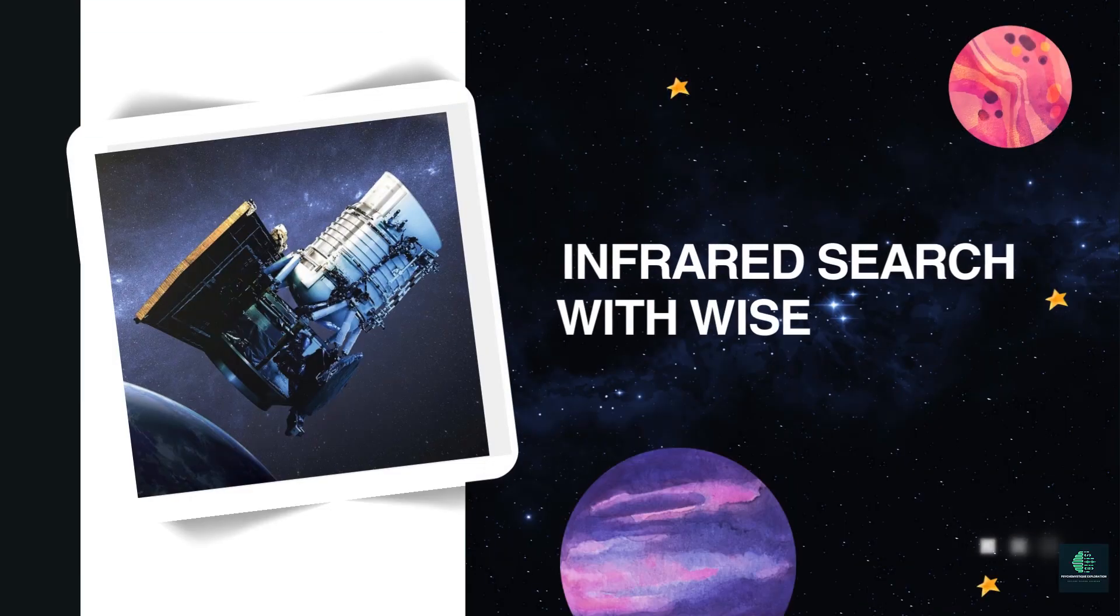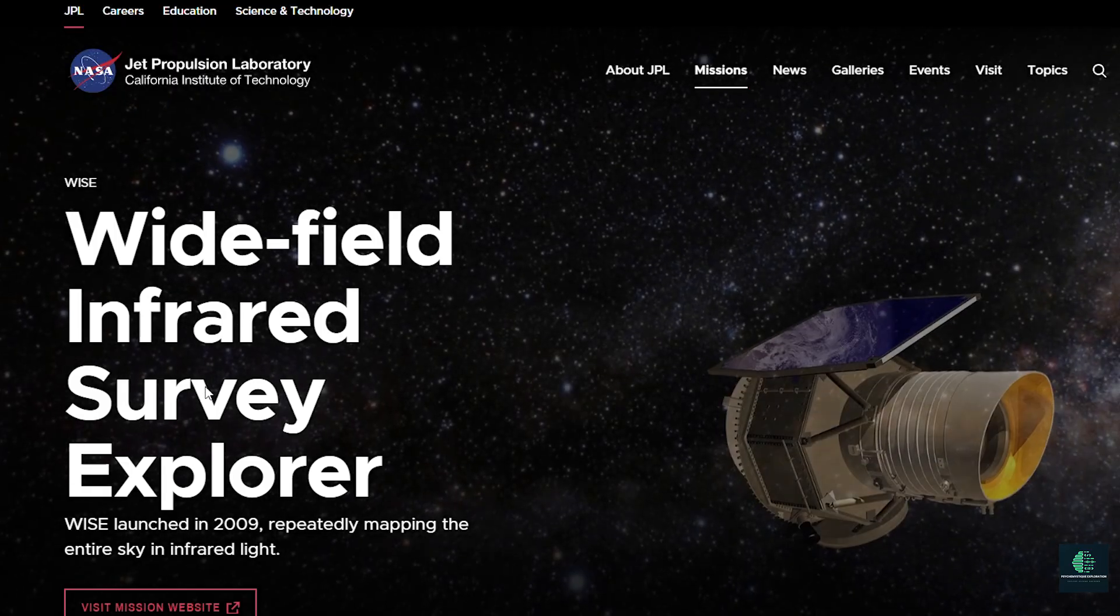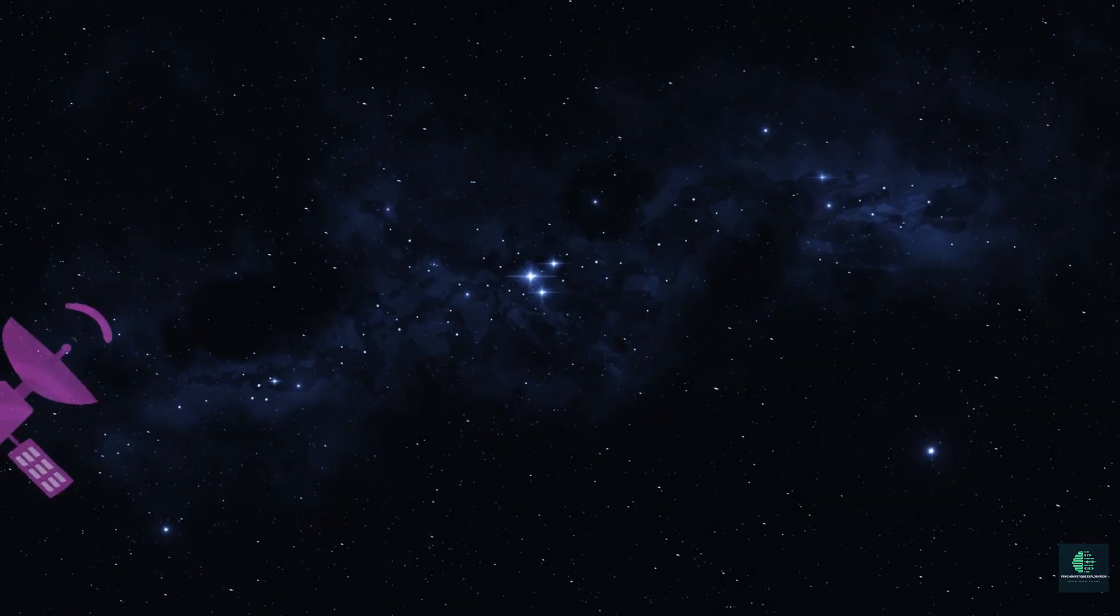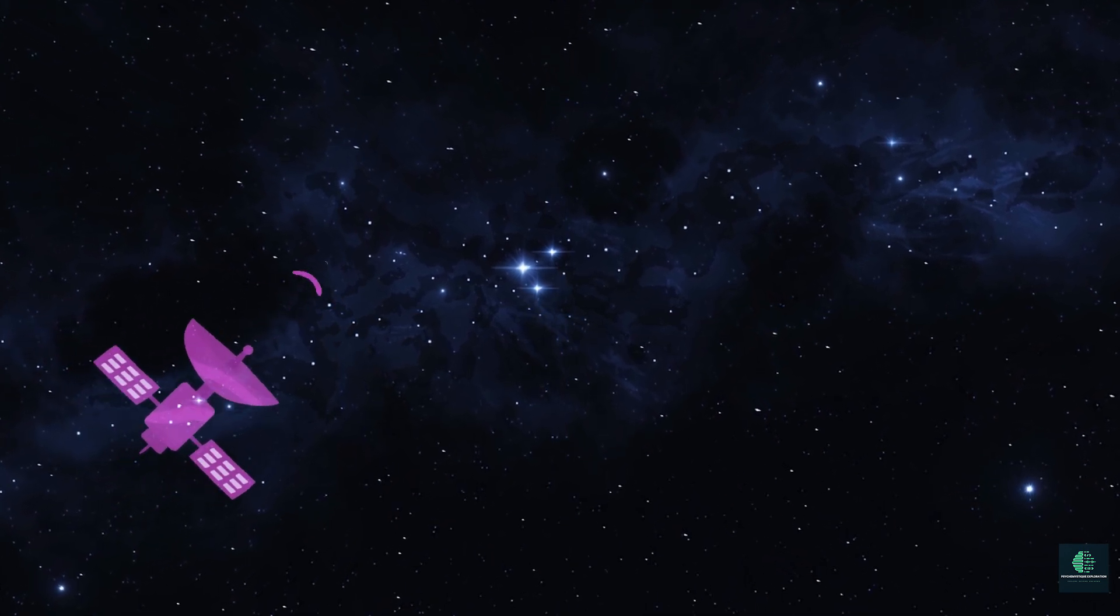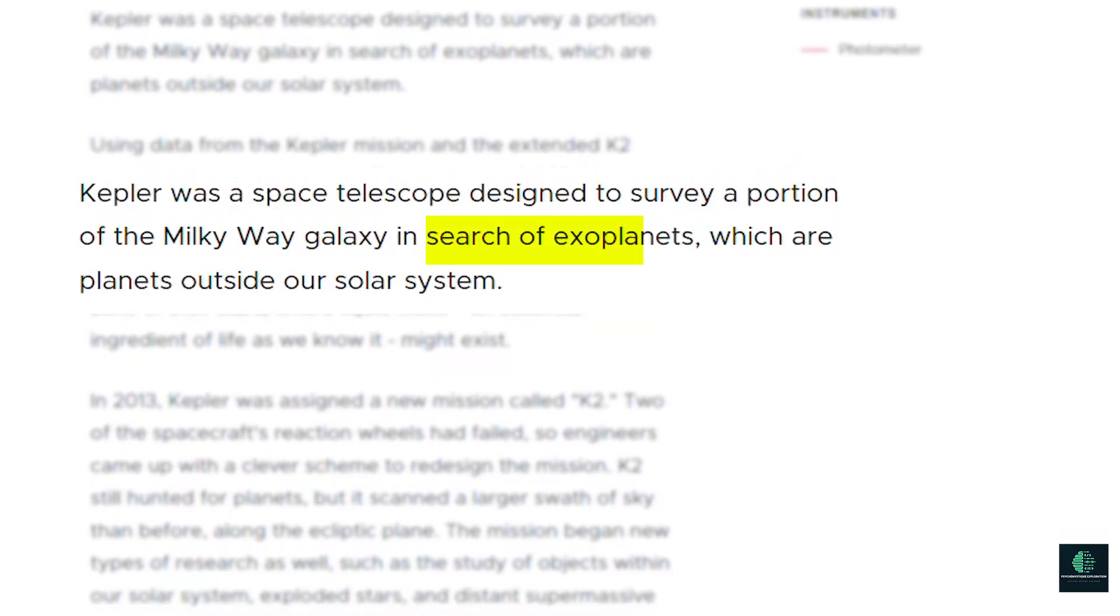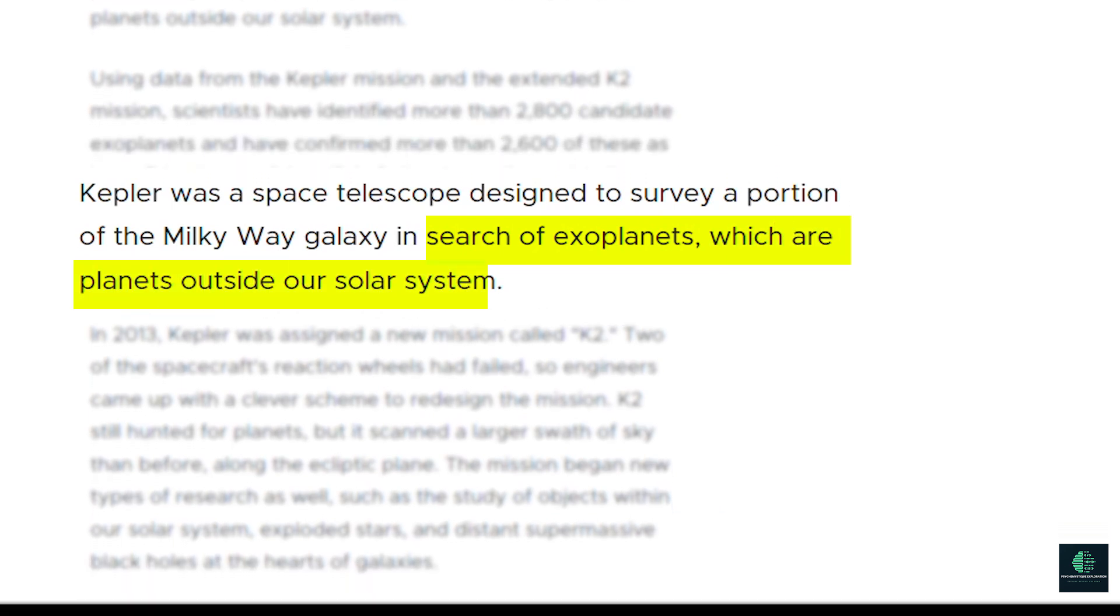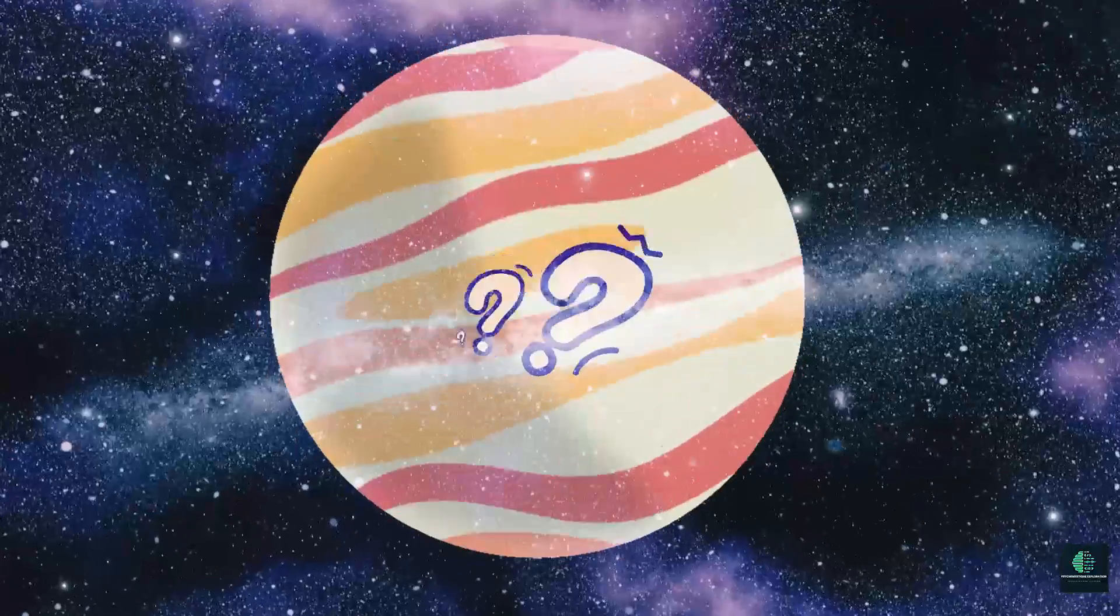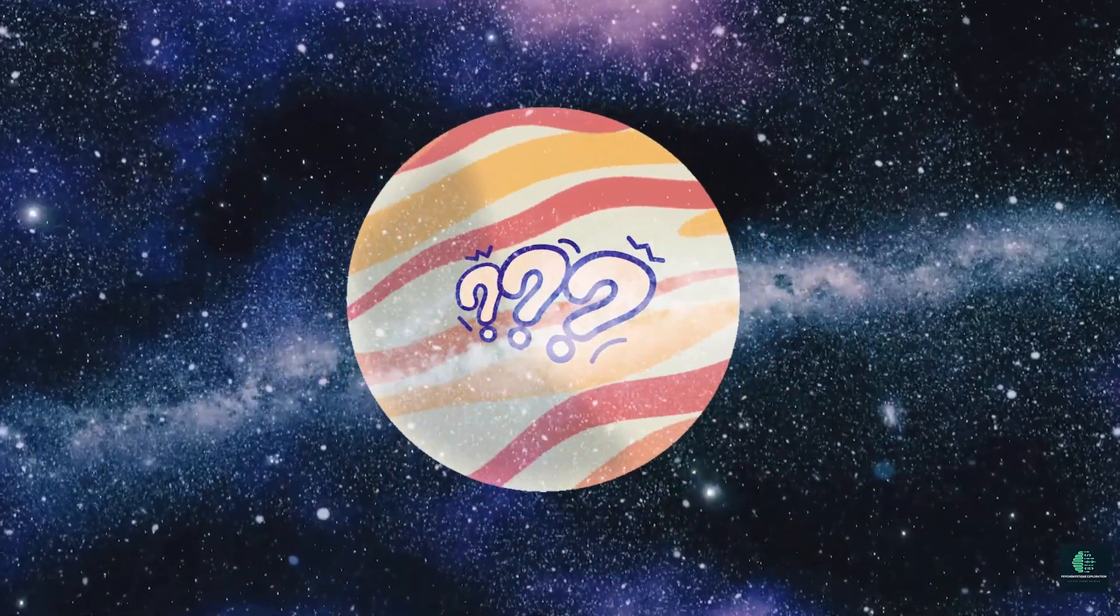Infrared Search with WISE: NASA's Wide Field Infrared Survey Explorer conducted an extensive survey of the sky in infrared wavelengths from 2010 to 2011. One of its objectives was to search for unknown large objects in the outer solar system, including Teich. However, the survey did not find evidence supporting Teich's existence, significantly reducing its likelihood.